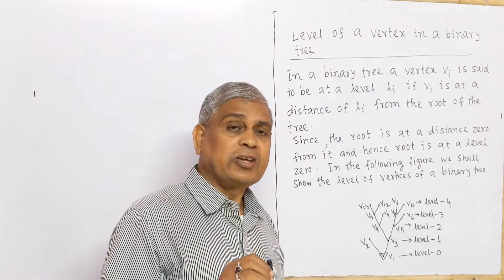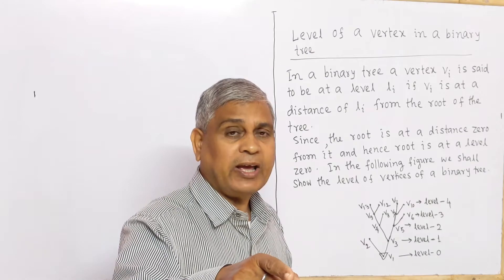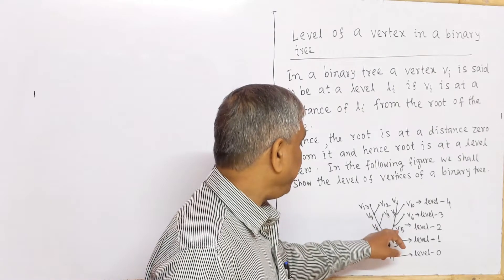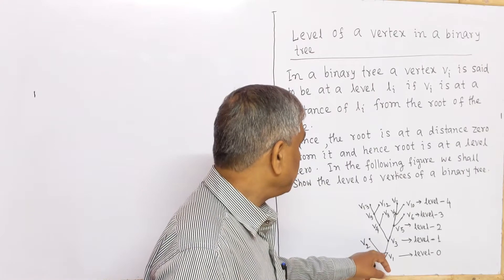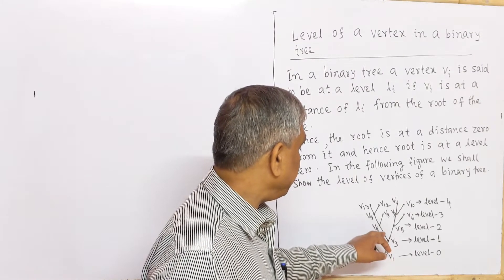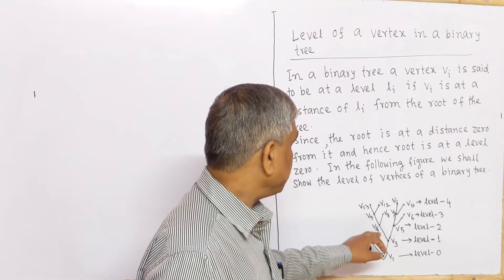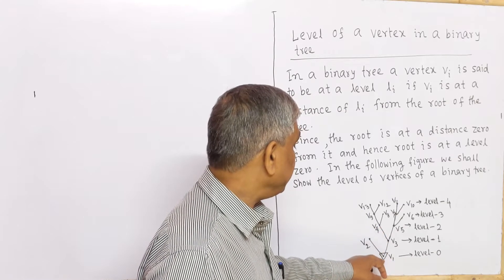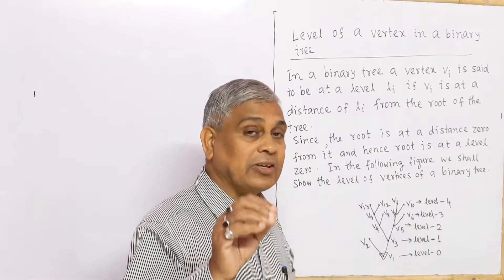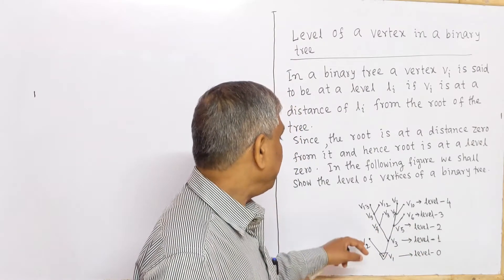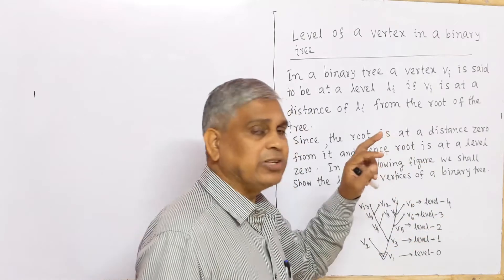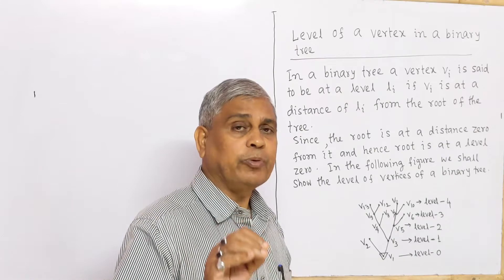The distance from the root to the vertex is known as the level of that vertex. V4 and V5 vertices are at distance 2 from the root. Root is vertex V1. From V1, counting 2 edges, the distance from V1 to V4 is 2. Similarly, distance from V1 to V5 is 2. So V4 and V5 are of level 2. Similarly, V9, V8, V7, V6 are of level 3 — they are at a distance 3 from the root.